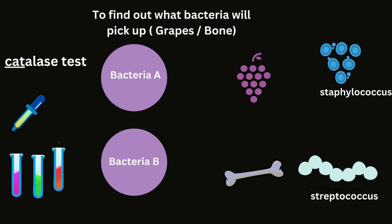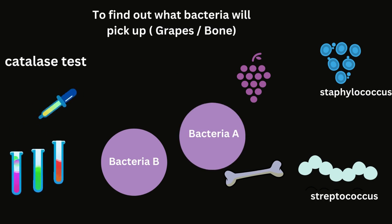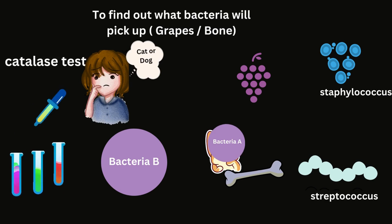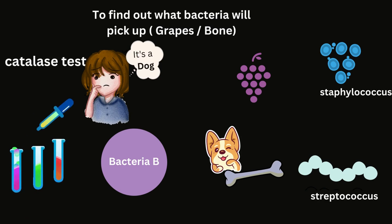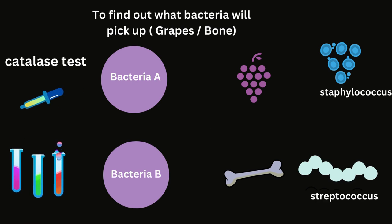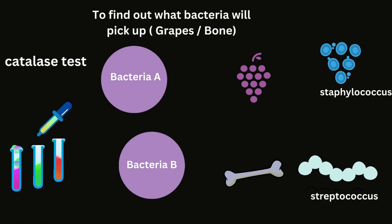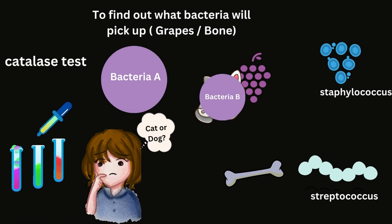A negative catalase test means we are dealing with a dog who likes bones and hence looks like a long straight bone, which is streptococcus bacteria — coccal bacteria arranged in a long string-like structure. If we obtain a positive catalase test result, it's indicative of a cat who likes bunched-up grapes. Therefore, it is like the staphylococcus bacteria.